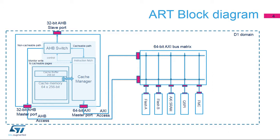Instruction fetch accesses can be qualified as cacheable or non-cacheable. The cache memory is organized in 64 lines of 256 bits each. Each line contains eight 32-bit segments. Each segment can contain one 32-bit or two 16-bit instruction codes. The cache buffer is an extra line of 256 bits, keeping a copy of one of the cache lines.